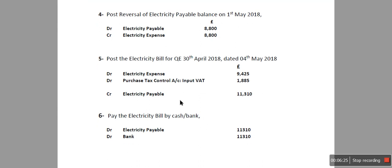Once you have done this, the last step is you just need to pay the electricity bill which is sitting in your balance sheet as the electricity payable account. This is the double entry for the whole of the accrued expense, and then I'll show you how to post this in Sage 50 Accounts.